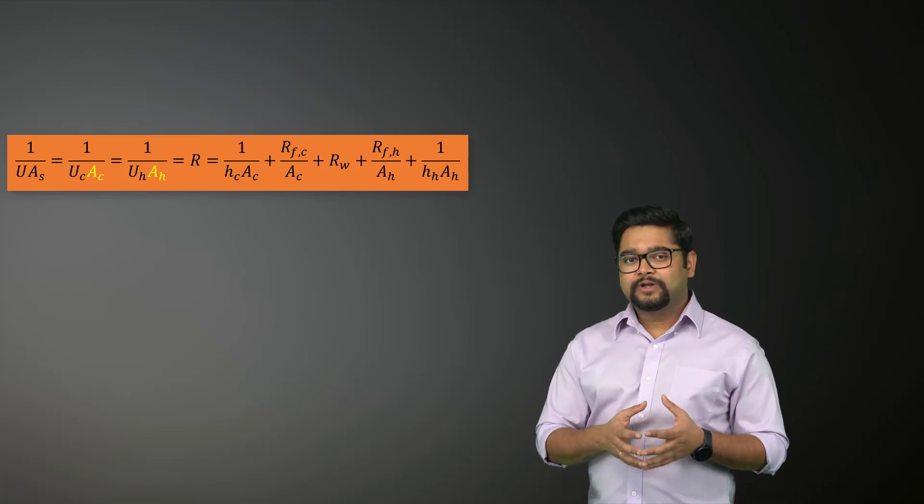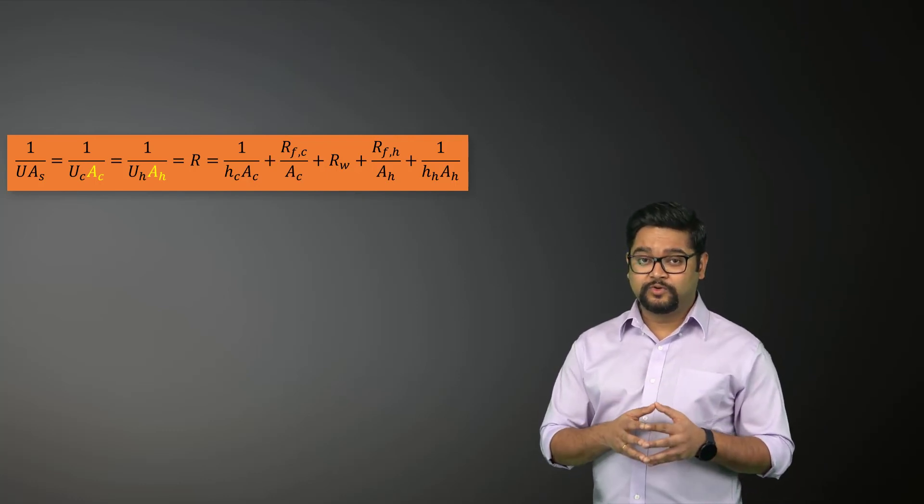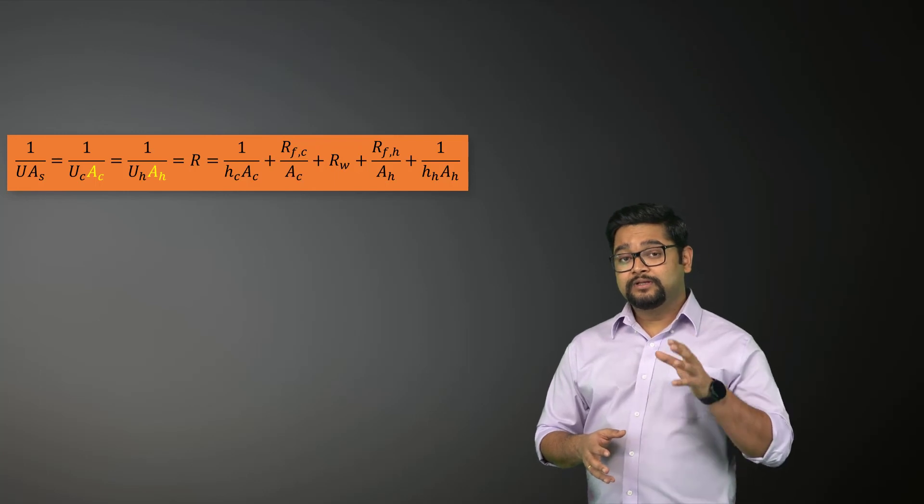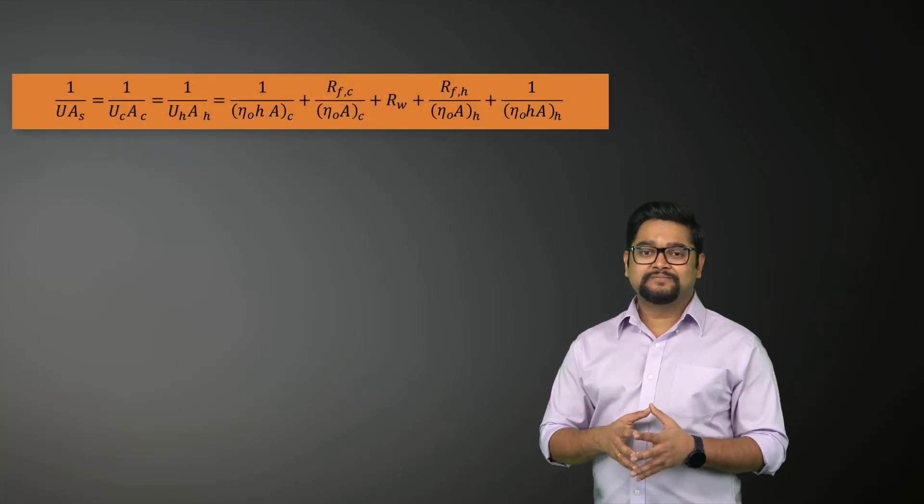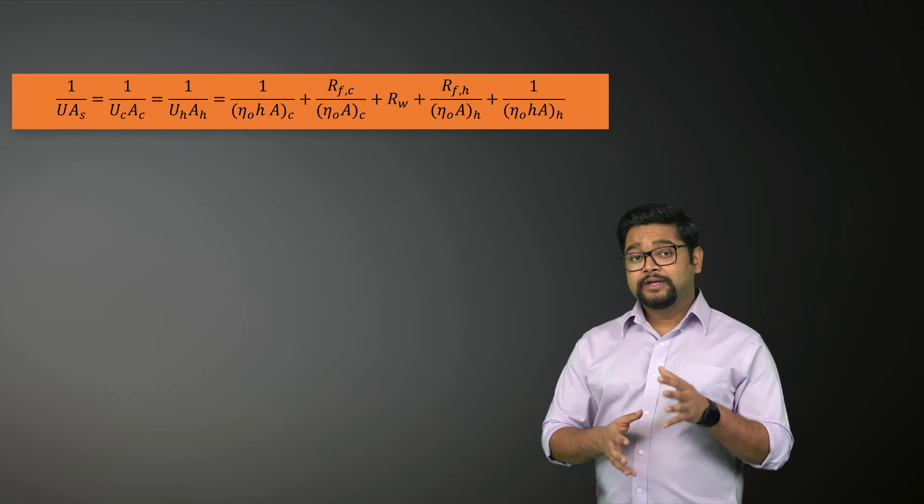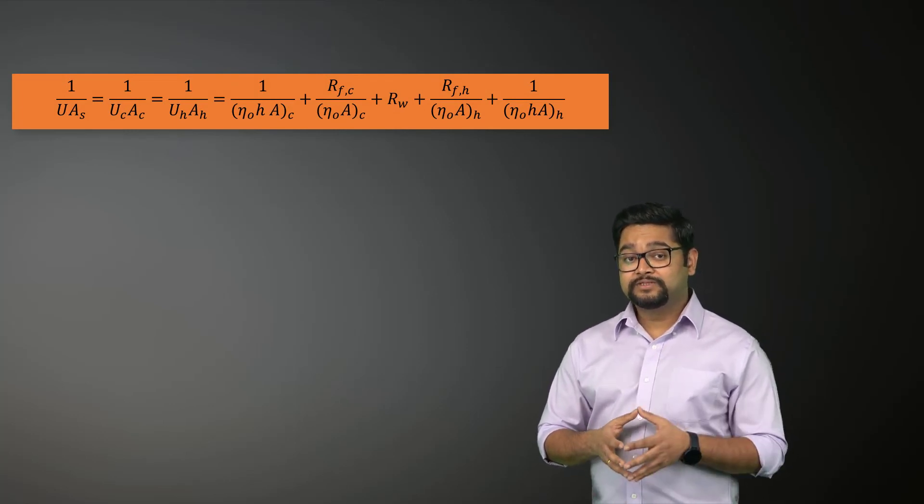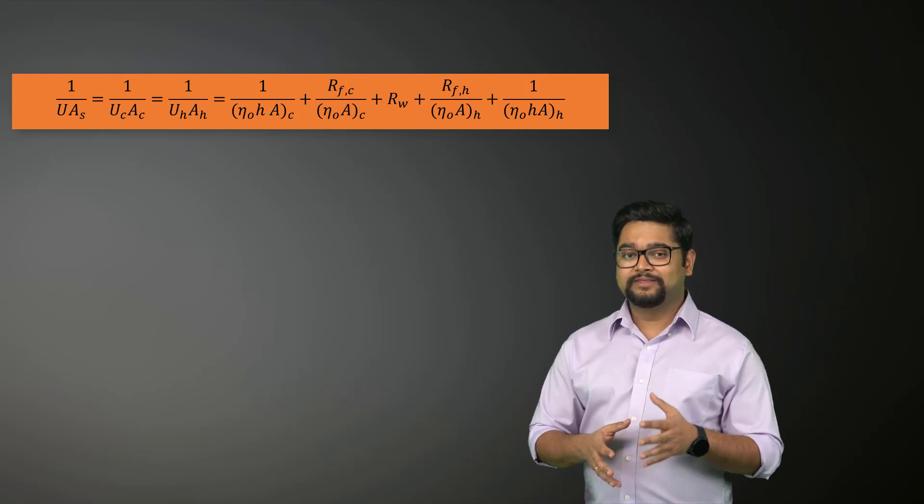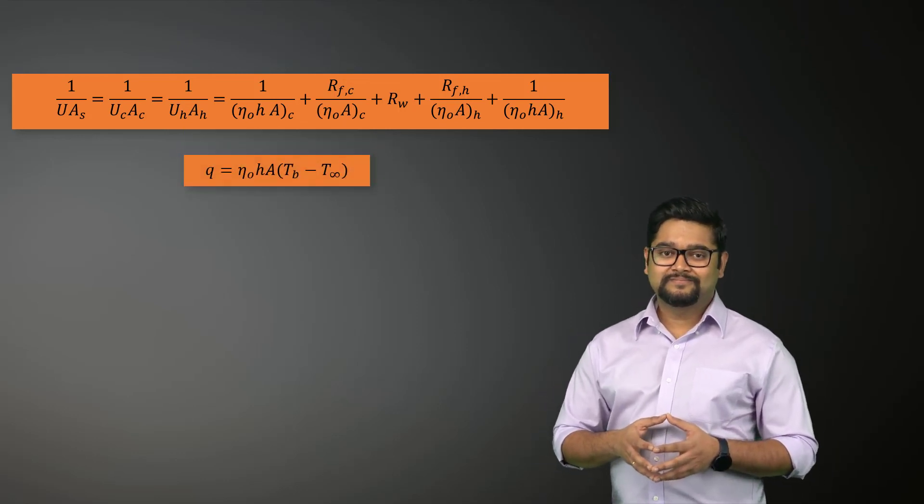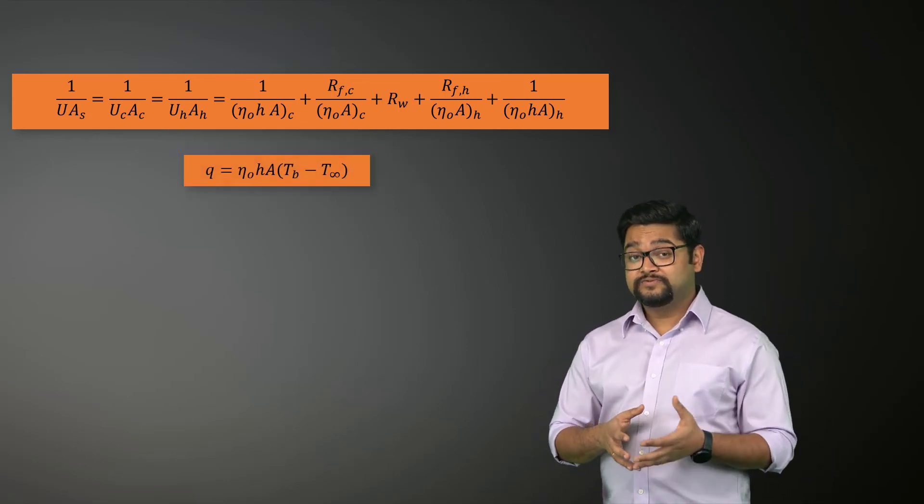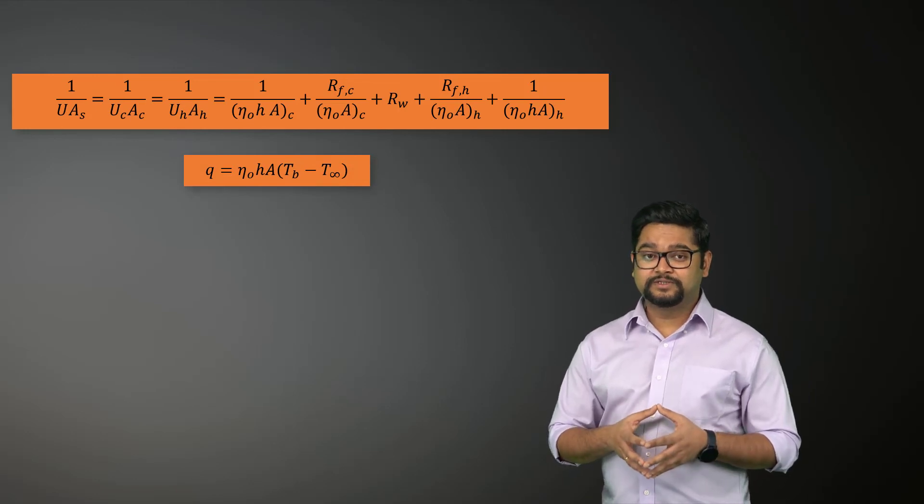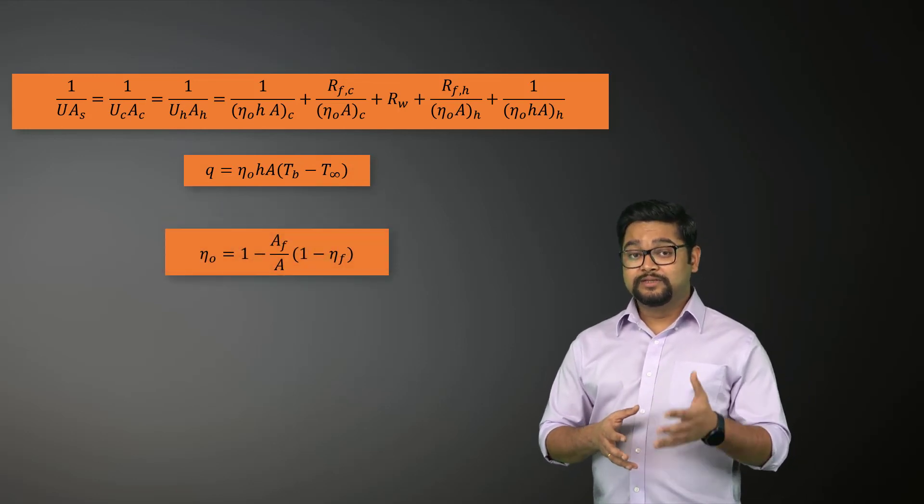We can now write the overall heat transfer coefficient including the fouling and the fin effects like this. Here, eta 0 represents the overall surface efficiency of a fin surface and is given by this expression. Using the heat transfer analysis for extended surfaces, it can be written in this form.